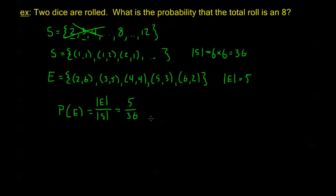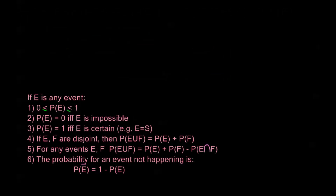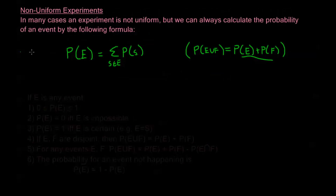We've taken our non-uniform experiment and broken it down into a uniform environment to find P(E) = 5/36. We could have also said each of those 36 rolls has probability 1/36, applied the summation formula, and since there were five favorable outcomes we'd have gotten 5 × (1/36) = 5/36 the same way. Both approaches give the same answer.